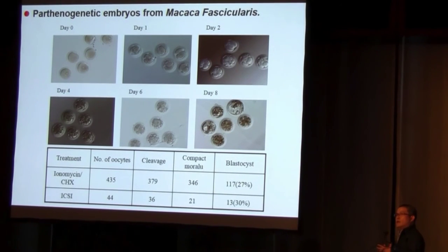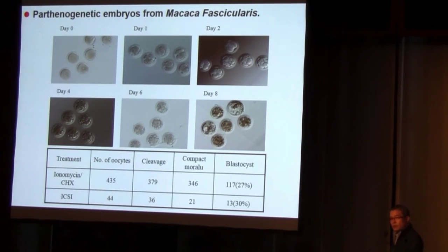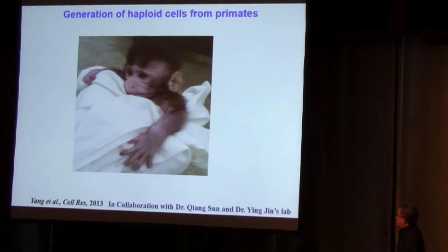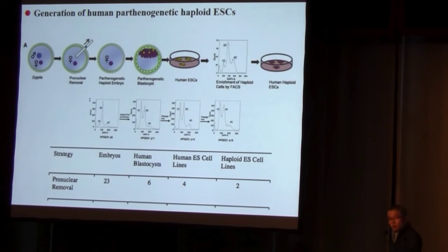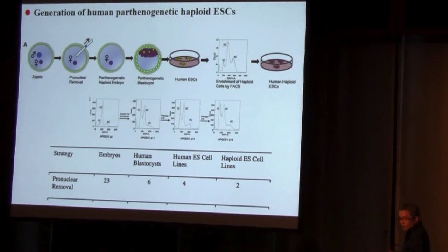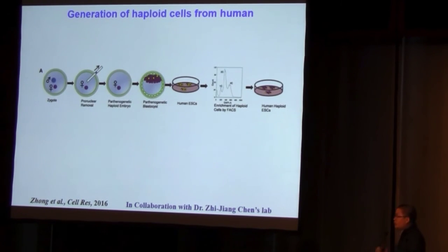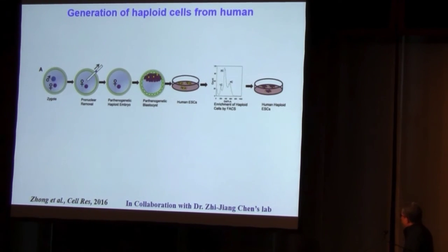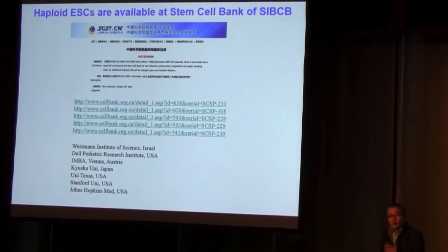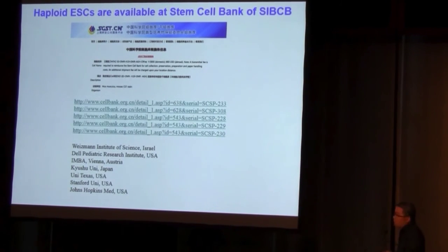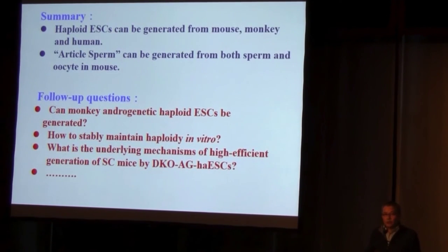We also tried to answer whether haploid cells could be derived from higher mammals. We produced haploid oocytes by activation, and from the resulting parthenogenetic blastocysts we generated two haploid cell lines from monkey. Finally, we asked whether we can produce haploid cells from human oocytes. From human parthenogenetic embryos produced by removing the male pronucleus from a zygote, we generated two haploid cell lines from human.